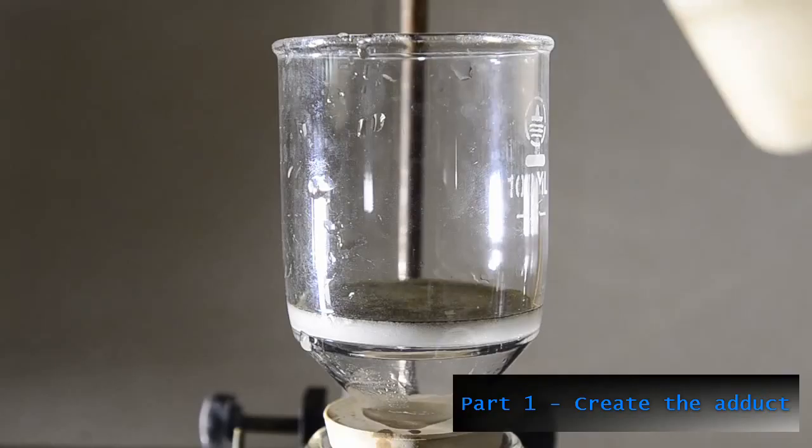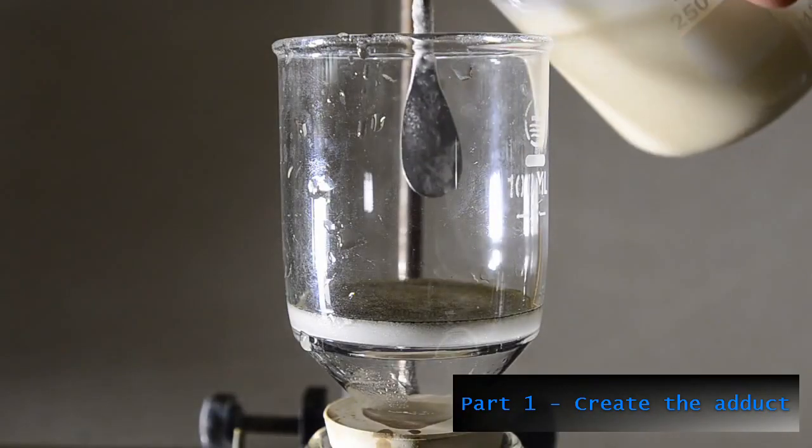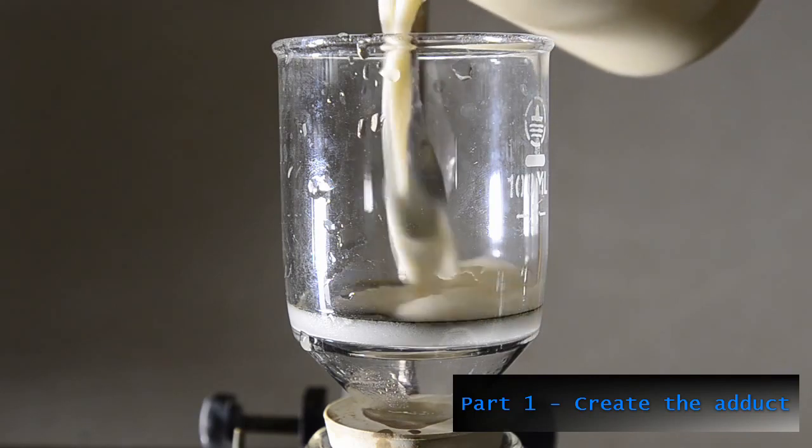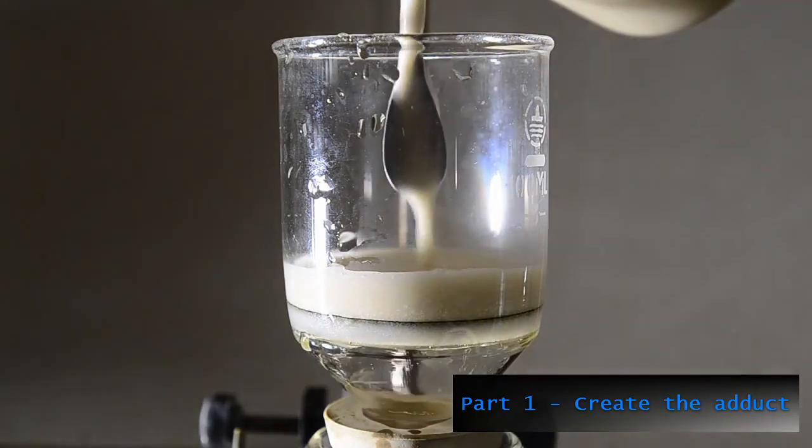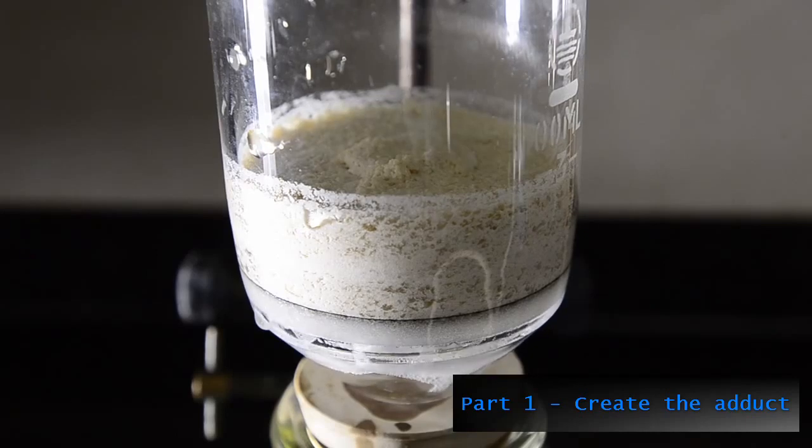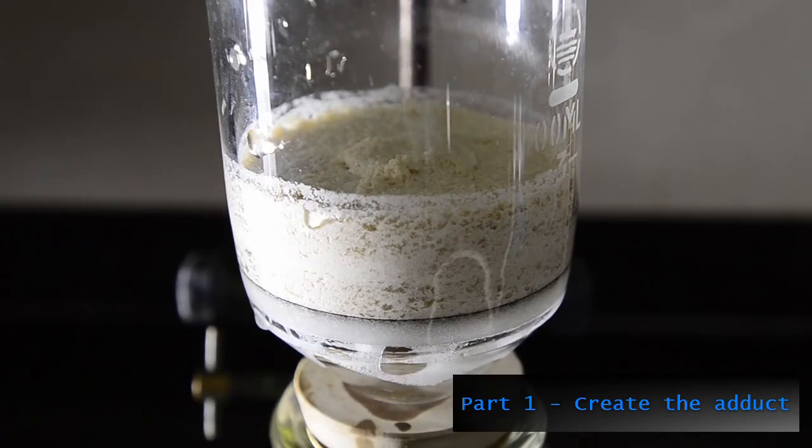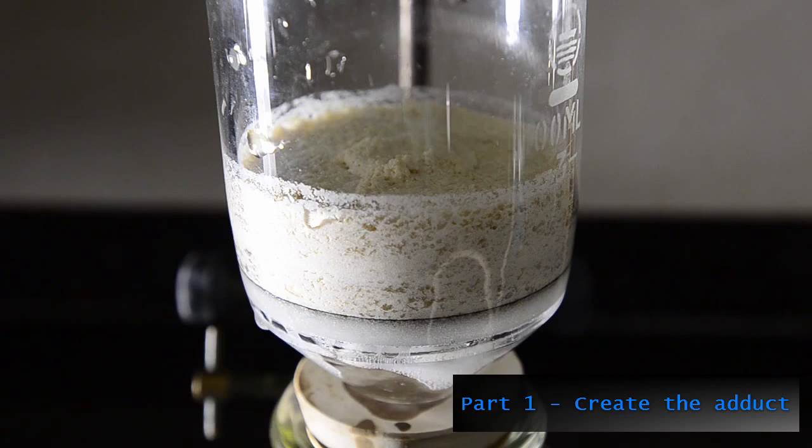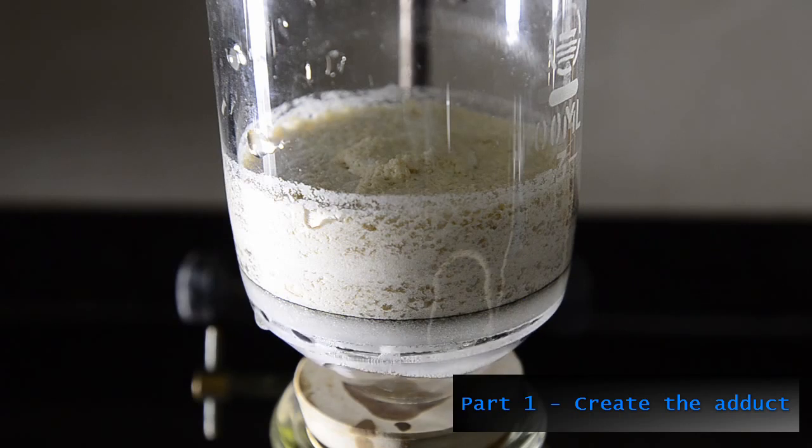Filter the precipitate, allow to dry and then wash with 10 milliliters of cold water. It's worth noting that if you ever want to purify an adduct such as this, you can wash it with cold ether or dichloromethane in order to remove unwanted organics without dissolving the adduct.